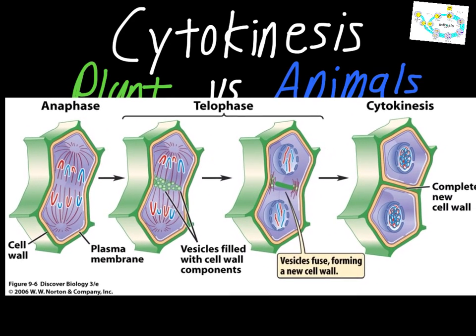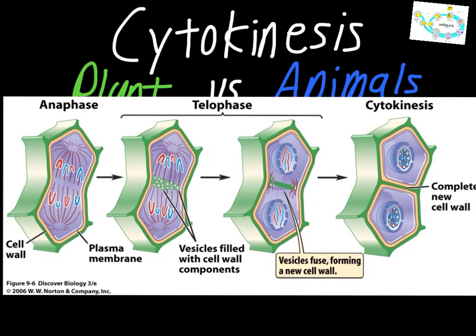So we blow this one up and take a look at it. Anaphase still pretty much looks the same — remember the word we associate with anaphase is 'apart,' so this is where the chromosomes are pulled apart to either pole of the cell. The thing that begins to happen then during telophase is that vesicles — and if you remember vesicles from our chapter on cells — those are the things coming from the Golgi apparatus that carry cell products.